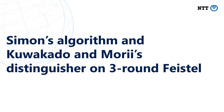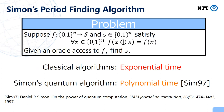I will explain Simon's algorithm and Kuwakado and Mori's distinguisher on 3-round Feistel, since our attack on contracting Feistel is based on it. Consider this problem: suppose there is a function f and a bit string s such that for all x, f(x ⊕ s) = f(x) — that is, s is a period of f — and given oracle access to f, find s. Classically, exponential time is required. However, Simon's algorithm solves this period-finding problem in polynomial time.